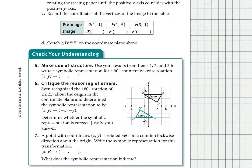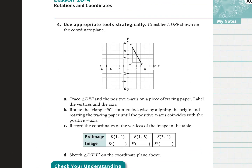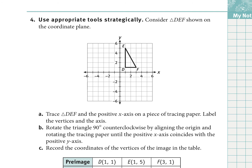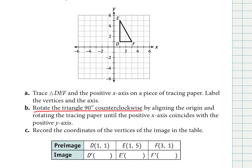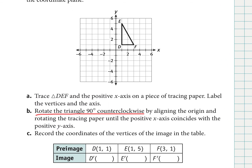Let's look at another example — number four. We have triangle DEF as the pre-image. Instead of using tracing paper, we'll apply the rule directly to get the image after a 90-degree counterclockwise rotation. The coordinates of points D, E, and F are given in the table. Applying the 90-degree rotation rule — any point (x, y) transforms into (−y, x) — let's follow that.